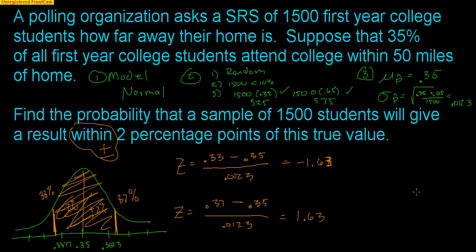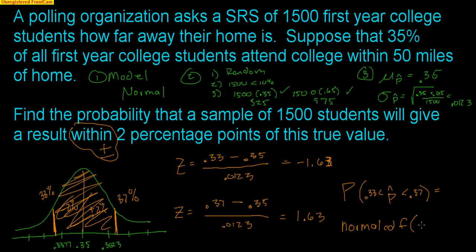Now I want to find the proportion of data between Z = −1.63 and Z = +1.63. I want to find the probability that my sample proportion P-hat is between 0.33 and 0.37. I'm going to use normal CDF on my calculator, going from −1.63 to +1.63, and I get a probability of 0.8969. So there's almost a 90% chance that a sample is going to come within 2 percentage points of the true value.